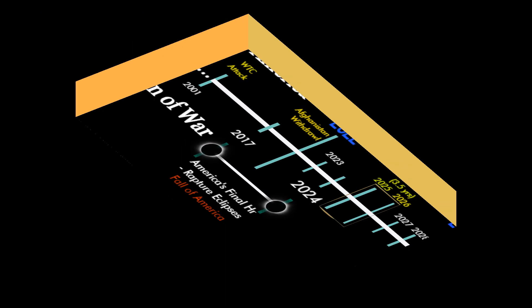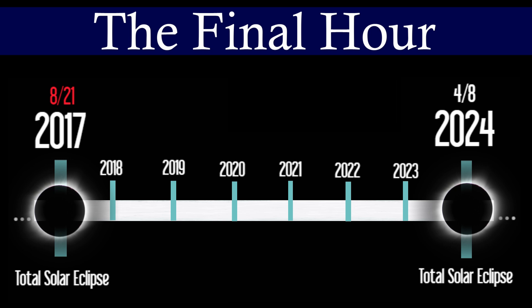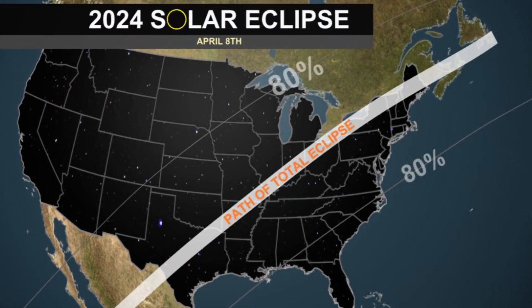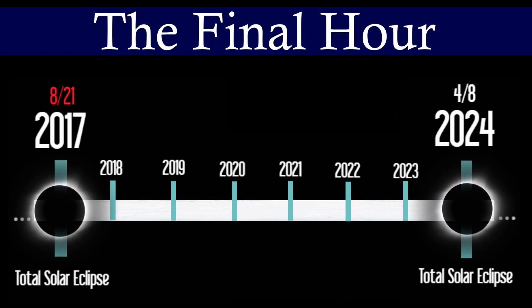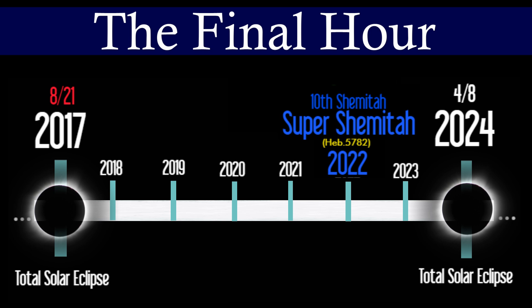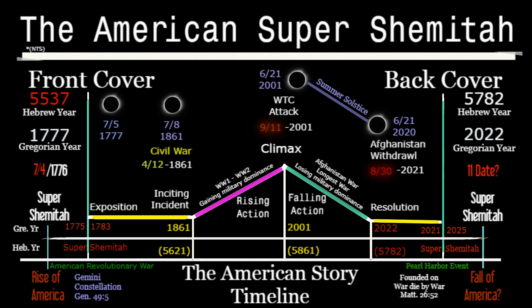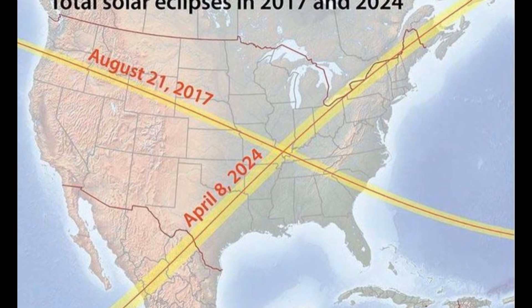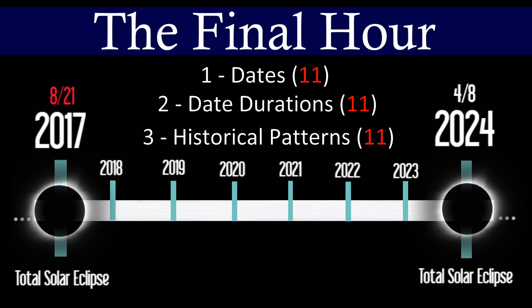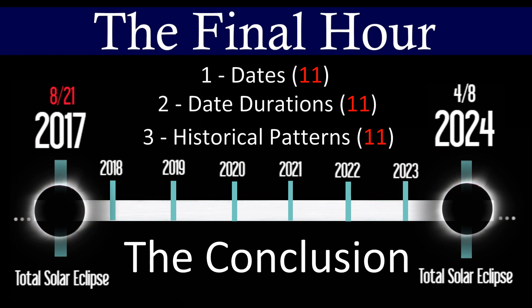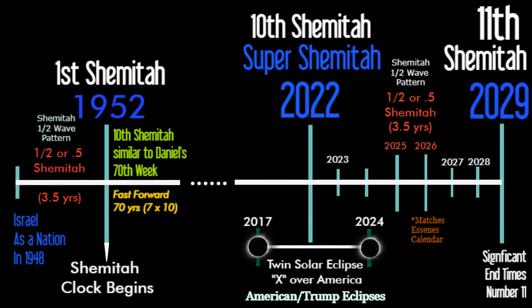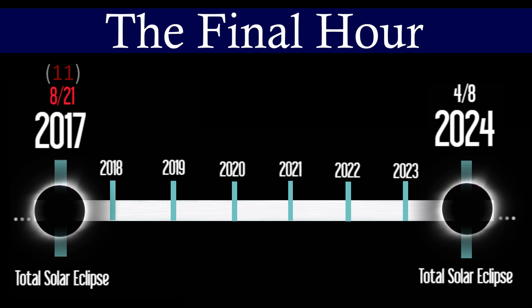We have two eclipses: one that occurred on August 21st of 2017, followed by the other portion of the X on 4/8 of 2024. Chronologically speaking, these encircle this particular Super Shemitah year of 5782 — the end cover of the American story. The date 8/21 is one of our 11-date connections, and interestingly 4/8, when you add those digits together, equals 12. God is using these dates as a metaphor for going from the 11th hour to midnight — or 12 minus 11: the final hour.